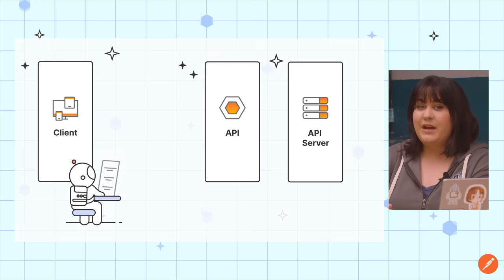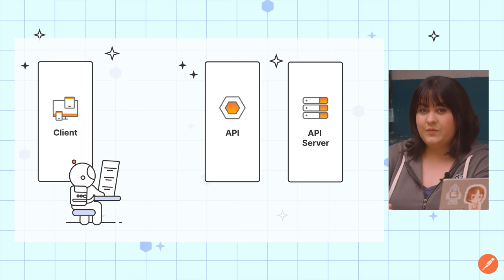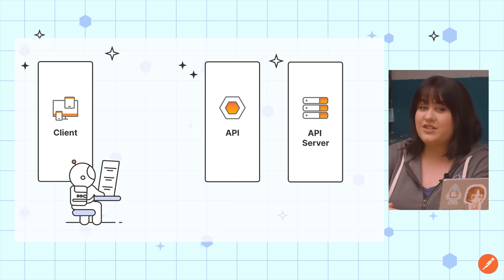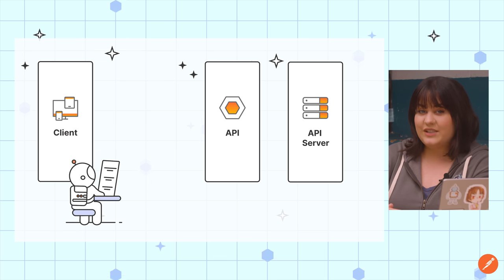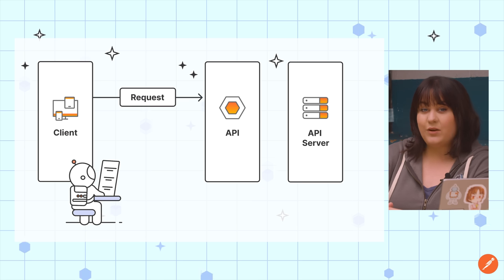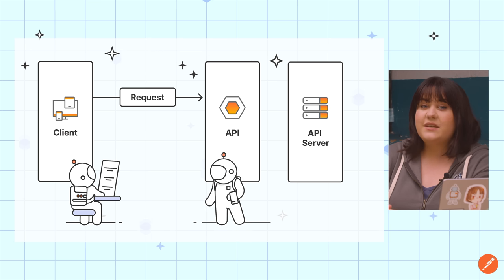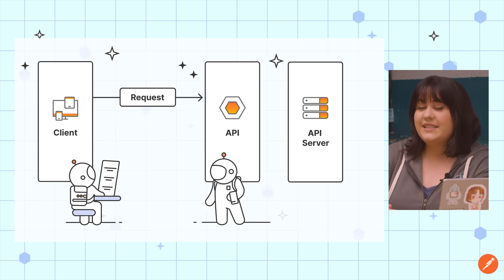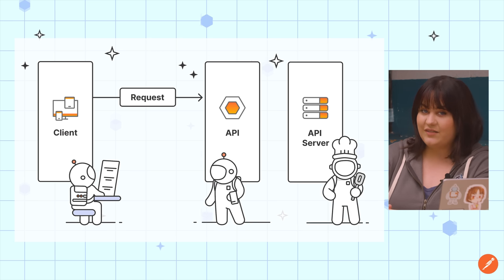The customer starts off by reading the menu, which lists all of the food that's available and describes each of the options. The restaurant curated this list based on what they wanted to offer. When the customer places their order with the waiter, they're making an API request. The waiter, the API, takes the customer's order and relays it to the kitchen — that is the API server.